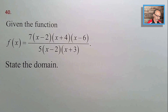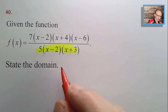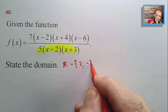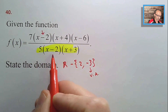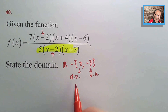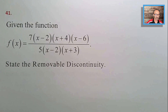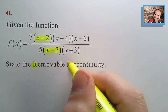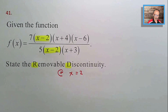Number forty: state the domain of the new function. The denominator zeros cause exclusions at x = 2 (removable discontinuity/hole) and x = −3 (vertical asymptote). Domain: all real numbers except 2 and −3.